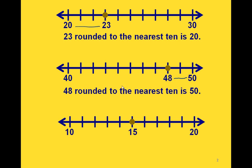What if we have one that's halfway in between? If we're trying to round 15 to the nearest 10, it's halfway between 10 and 20. The standard way we handle this is: if the digit is 5, we round up. So we would round this one up to 20.